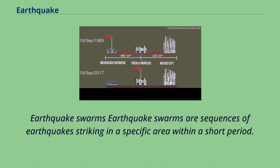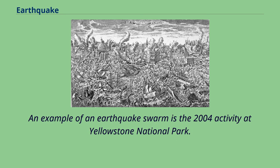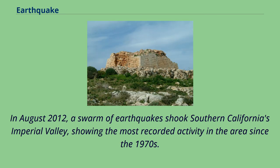Earthquake swarms are sequences of earthquakes striking in a specific area within a short period. They differ from earthquakes followed by aftershocks in that no single earthquake in the sequence is obviously the main shock, so none has a notably higher magnitude than another. An example of an earthquake swarm is the 2004 activity at Yellowstone National Park. In August 2012, a swarm of earthquakes shook Southern California's Imperial Valley, showing the most recorded activity in the area since the 1970s.